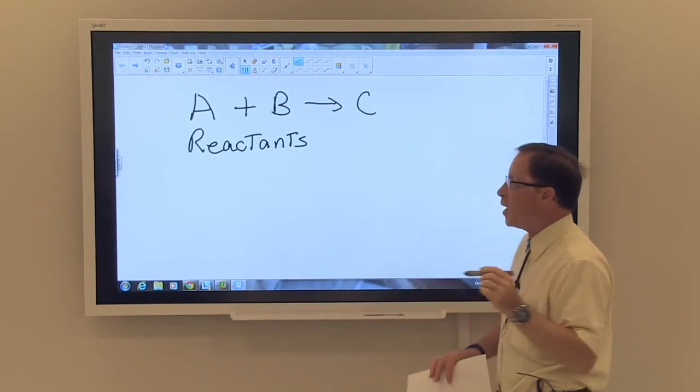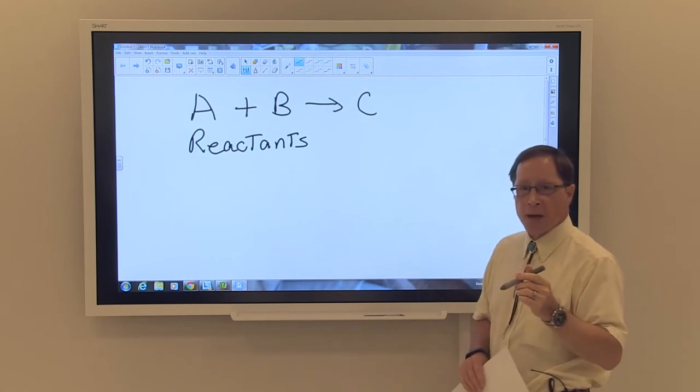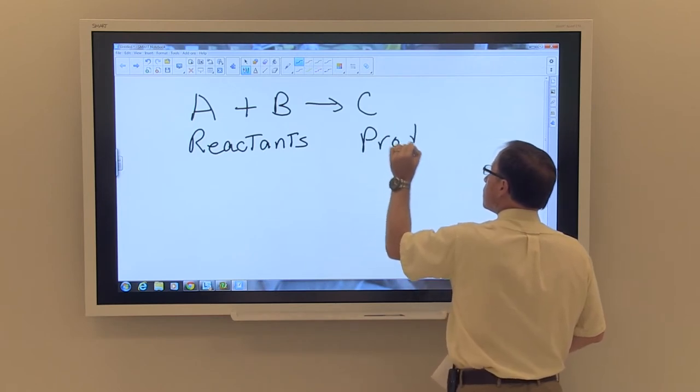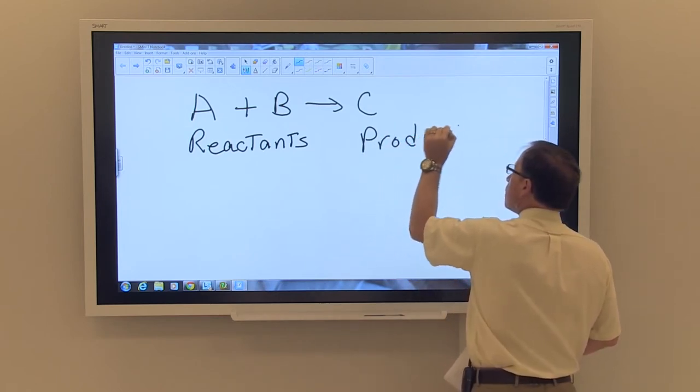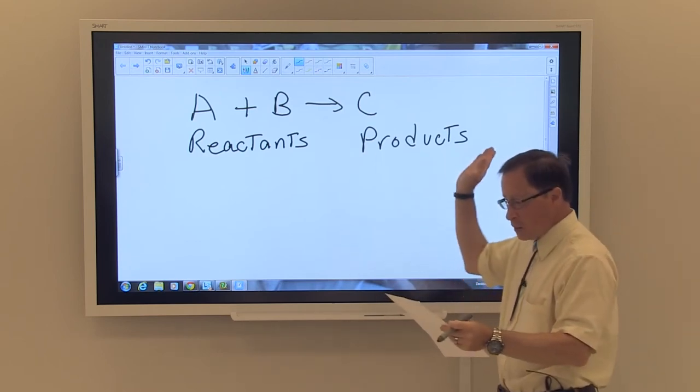If you want to know where your reactants are, essentially the arrow is pointing away from the reactants and toward the products. So the products are on this side.